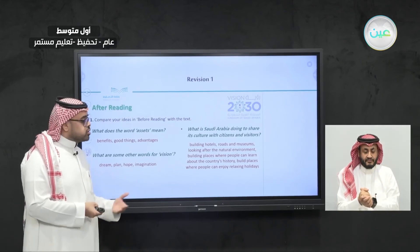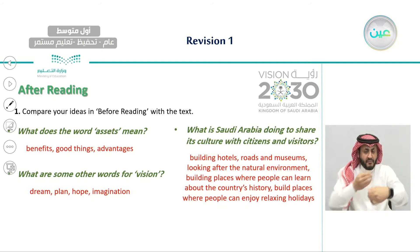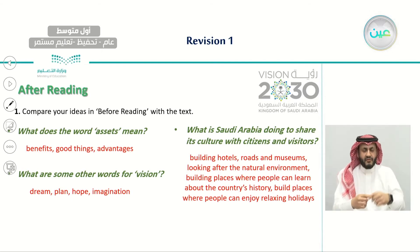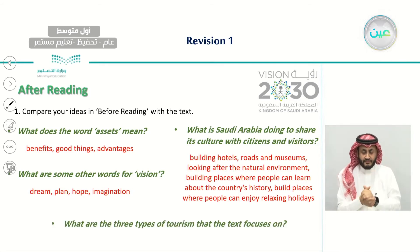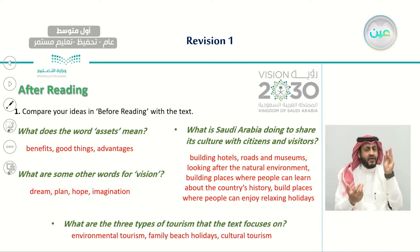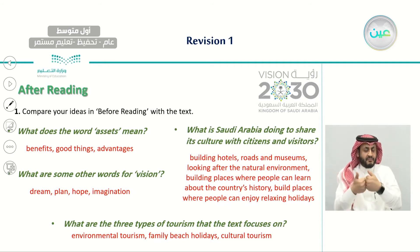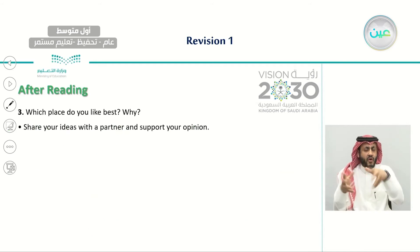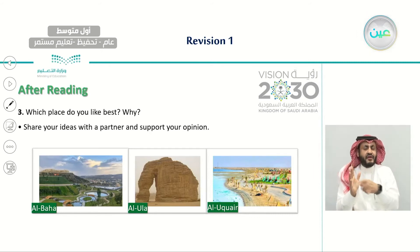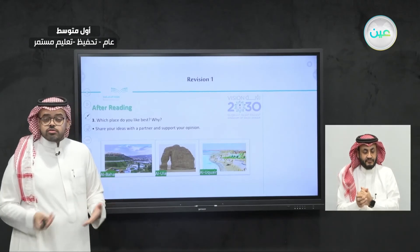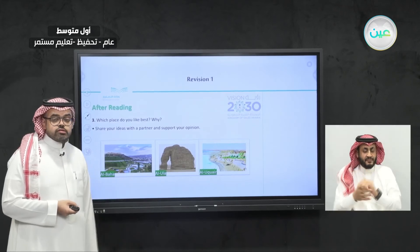The text mentioned what Saudi Arabia is doing to share its culture with citizens and visitors — for example, building hotels, roads, and museums; looking after the natural environment; and building places where people can learn about the country's history and enjoy relaxing holidays. The three types of tourism the text focuses on are environmental tourism, family beach holidays, and cultural tourism. We then answered questions about which of these places you like best and why.